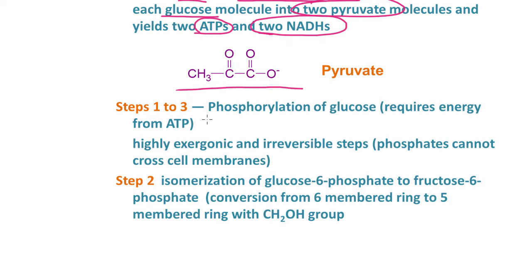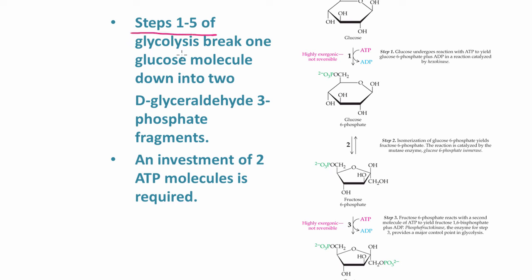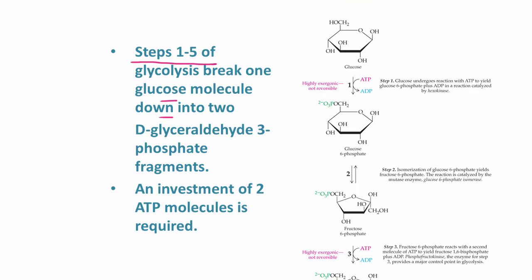In glycolysis steps 1 through 5, each glucose molecule is broken down into D-glyceraldehyde-3-phosphate fragments. Steps 1 through 5 require an investment of two ATP molecules. The phosphorylation of glucose in step 1 is highly exergonic and irreversible, requiring energy from ATP. Step 2 involves isomerization of glucose-6-phosphate to fructose-6-phosphate—a rearrangement where a six-membered ring is converted to a five-membered ring.